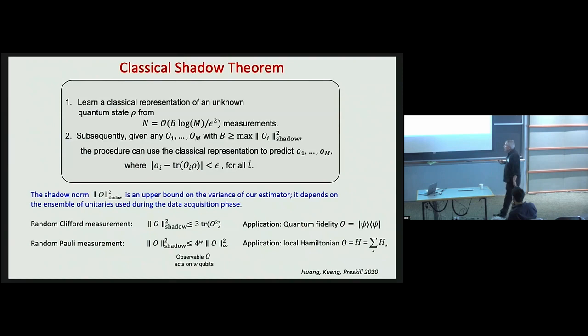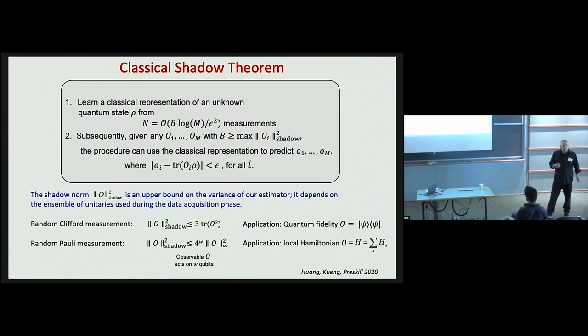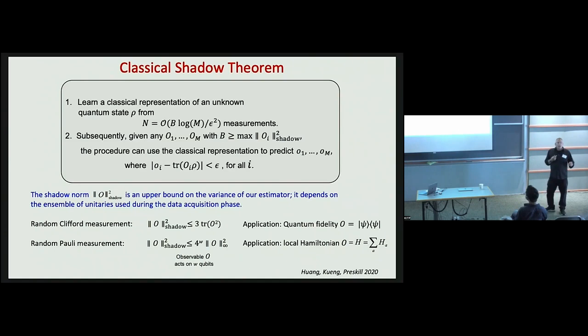But how good is that estimate? The fundamental theorem about classical shadows includes two statements. First, there's an upper bound on the variance of the estimator. Second, there's a statement that large deviations from mean values are exponentially rare compared to that variance. This means I can take capital N inverted snapshots and, with high success probability, accurately predict a number of expectation values which is exponential in that number of snapshots — the number of states I measured.